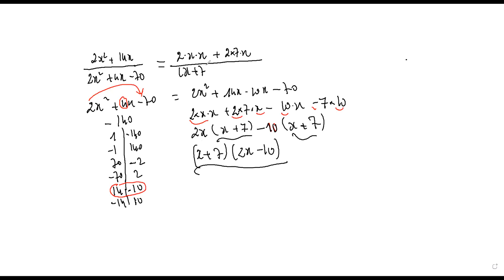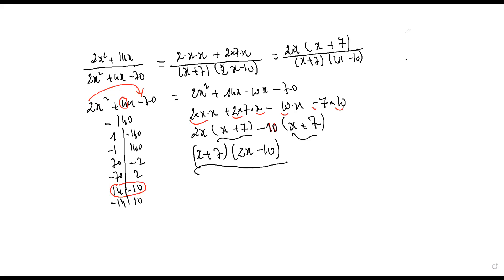We have x plus seven, factor two x minus ten in the denominator. The numerator factorizes as 2x, factor x plus seven. Cancel x plus seven from top and bottom, and the answer is two x over two x minus ten.